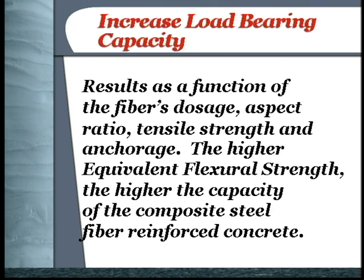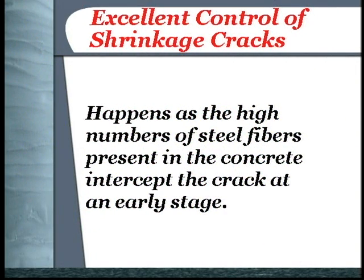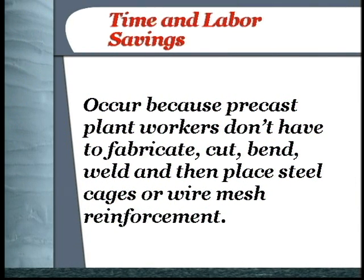Steel fibers provide a substantial increase in load capacity to first crack and ultimate load at the joints. High impact resistance is created because the absorbed energy in steel fiber reinforced concrete during impact is many times greater than energy absorption of plain concrete. Excellent control of shrinkage cracks happens as the high number of steel fibers present in the concrete intercept the crack at an early stage. Time and labor savings occur because the precast plant workers don't have to fabricate, cut, bend, weld, and then place steel cages or wire mesh reinforcement.